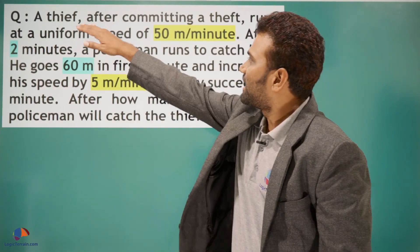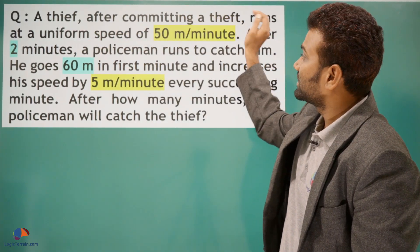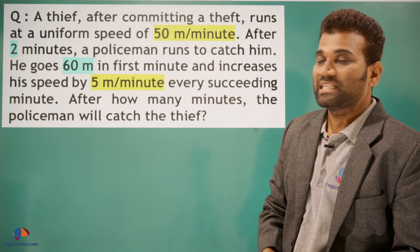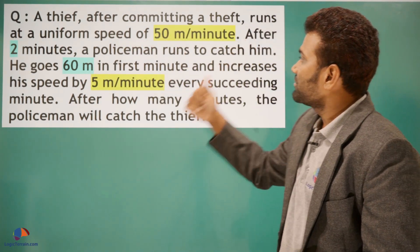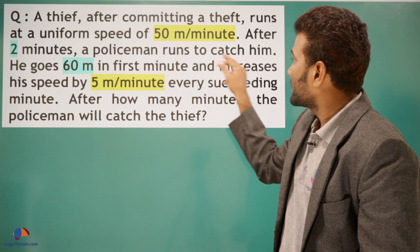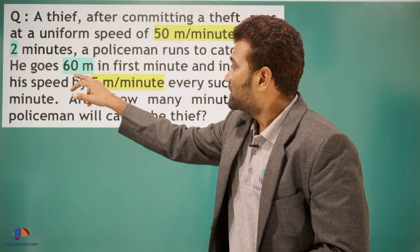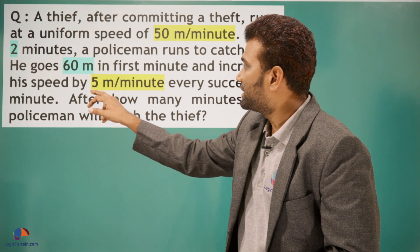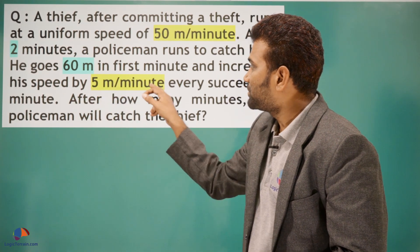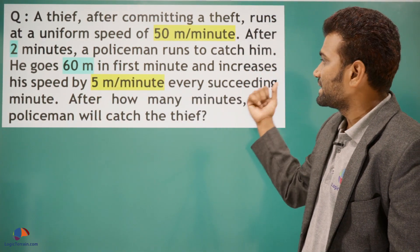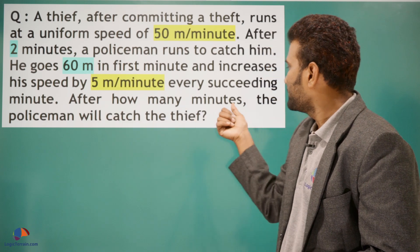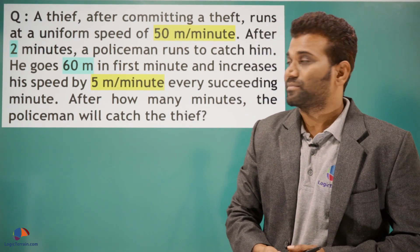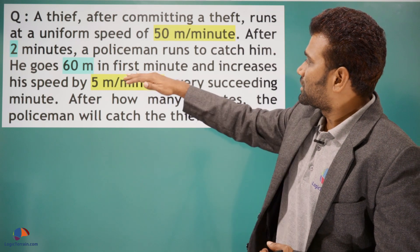A thief after committing a theft runs at a uniform speed of 50 meters per minute. After two minutes, a policeman runs to catch him. He goes 60 meters in the first minute and increases his speed by 5 meters per minute every succeeding minute. After how many minutes will the policeman catch the thief?